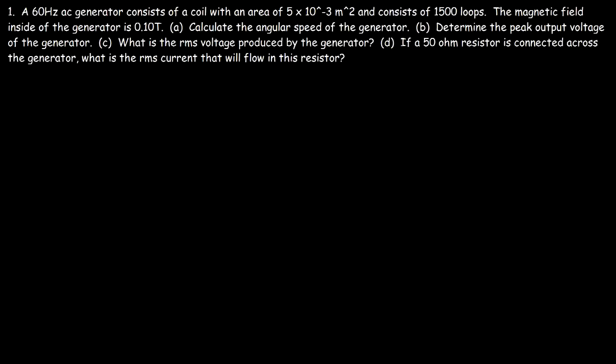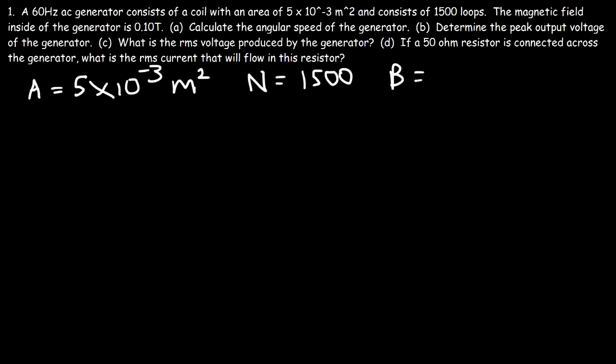In this video we're going to focus on solving some common physics problems associated with electric generators. In this problem we have a 60 Hz AC generator with a coil area of 5×10⁻³ square meters, 500 loops, and a given magnetic field strength. Let's list what we know: area, number of loops, magnetic field strength, and frequency of 60 Hz.